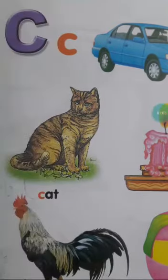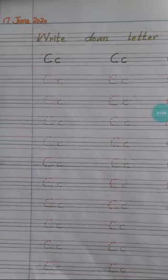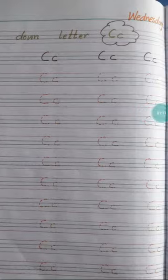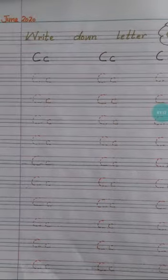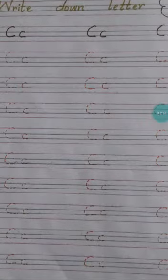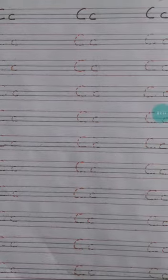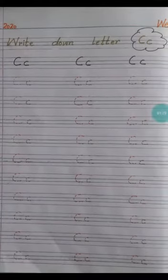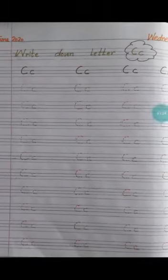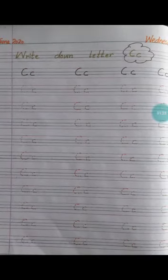Now open your copies. Copies pe aap logon ye is tarh 17 June date ka kaam hai, ya aapka write down letter C. If you wrote C for car, C for cat, C for candle. Okay, this is your homework.